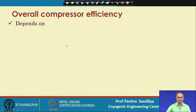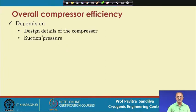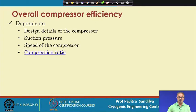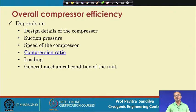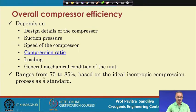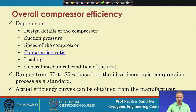The overall efficiency of a compressor depends on factors such as the design details of the compressor, the suction pressure P1, the speed of the compressor, the compression ratio, the loading of the compressor, and the mechanical condition — for instance, if there is wear in the compressor unit. The range of overall efficiency varies between about 75 to 85 percent, based on the ideal isentropic compression process as a standard. Actual efficiency curves are provided by the manufacturer.